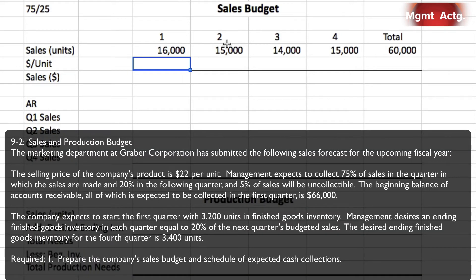The marketing department of Grabber Corporation has submitted a sales forecast for the upcoming fiscal year. We can see sales in units for the four quarters with a total column. The selling price of the company's product is $22 per unit.